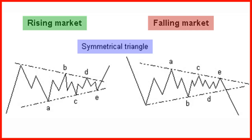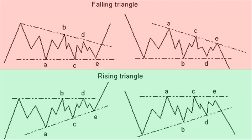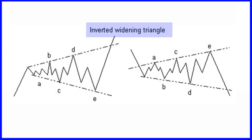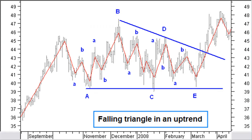In the normal triangles we have three types: symmetrical, as in the previous picture, and falling or rising triangles like in this picture. The inverted widening triangle only exists in a symmetrical version and is rather rare. A triangle with a correction zigzag wave in each of the five legs A to E makes a rather complex reaction, as you can see in this example with a falling triangle in an uptrend reaction.